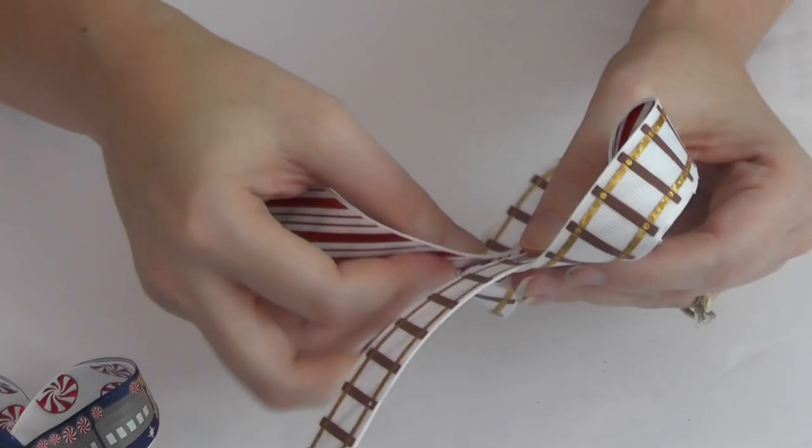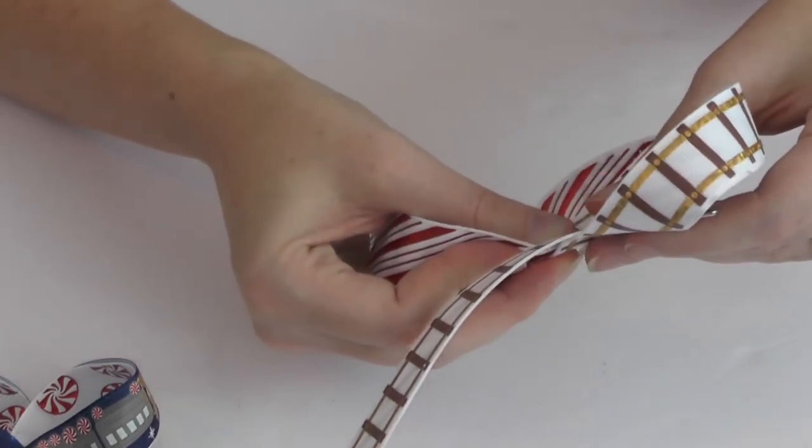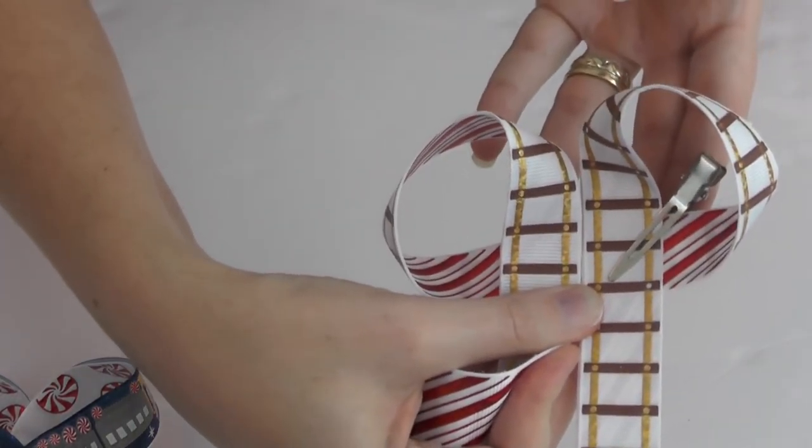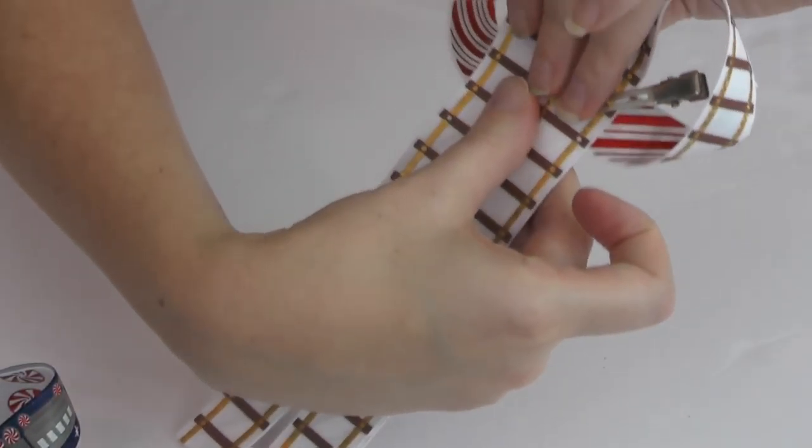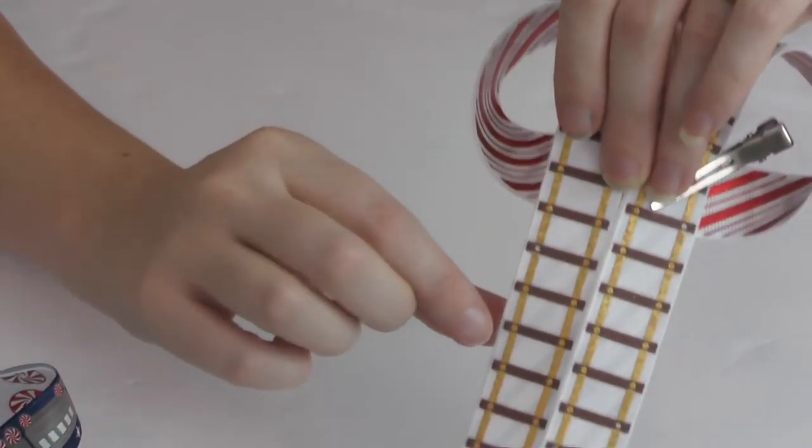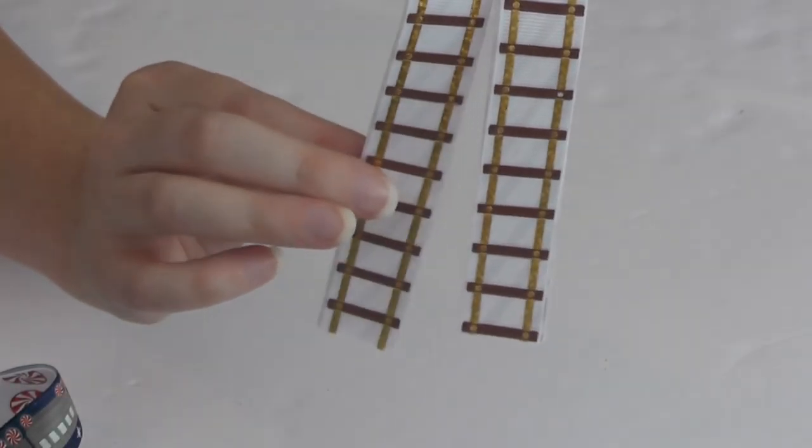Now just form your second loop and put it side by side. And a good way to measure where your loops need to meet, go down here and see your tails.